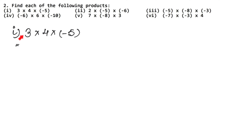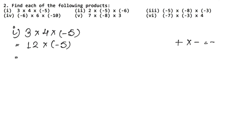There is no sign ahead of 3, so it is positive. Plus into plus is plus. So 3 × 4 = 12. Now 12 is positive and minus 5 is negative. Plus into minus is minus, and 12 × 5 = 60. So the answer is minus 60.